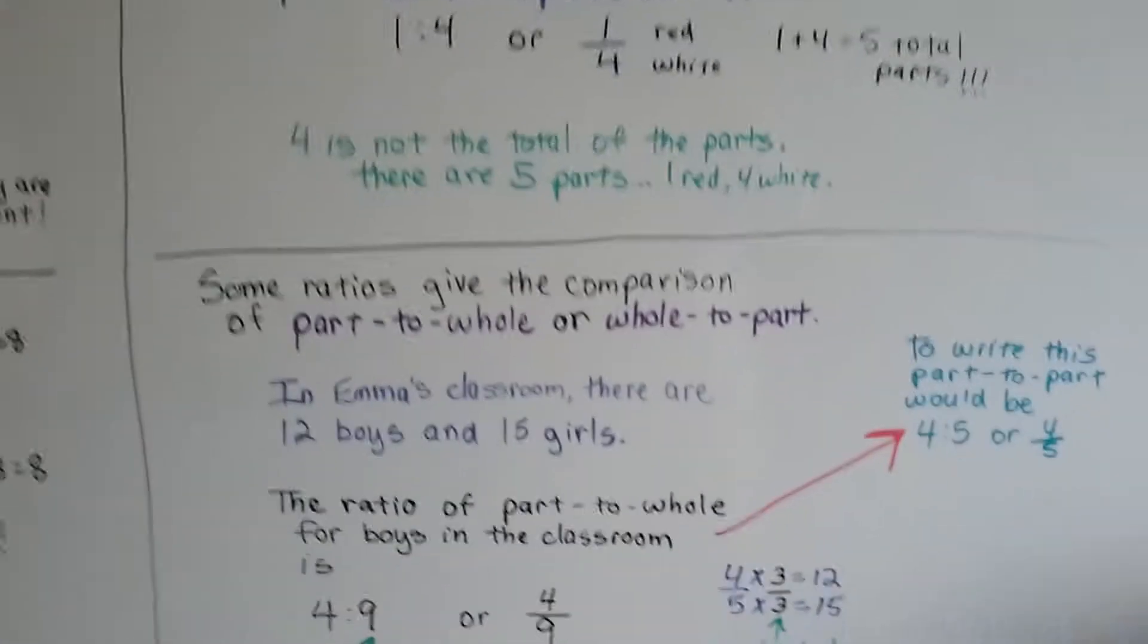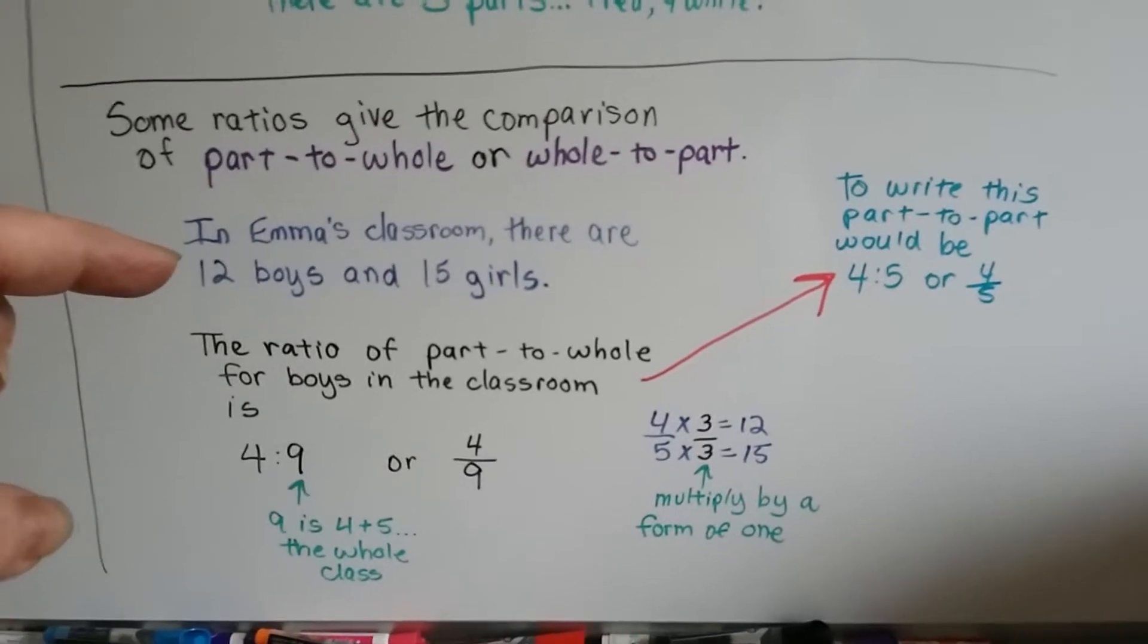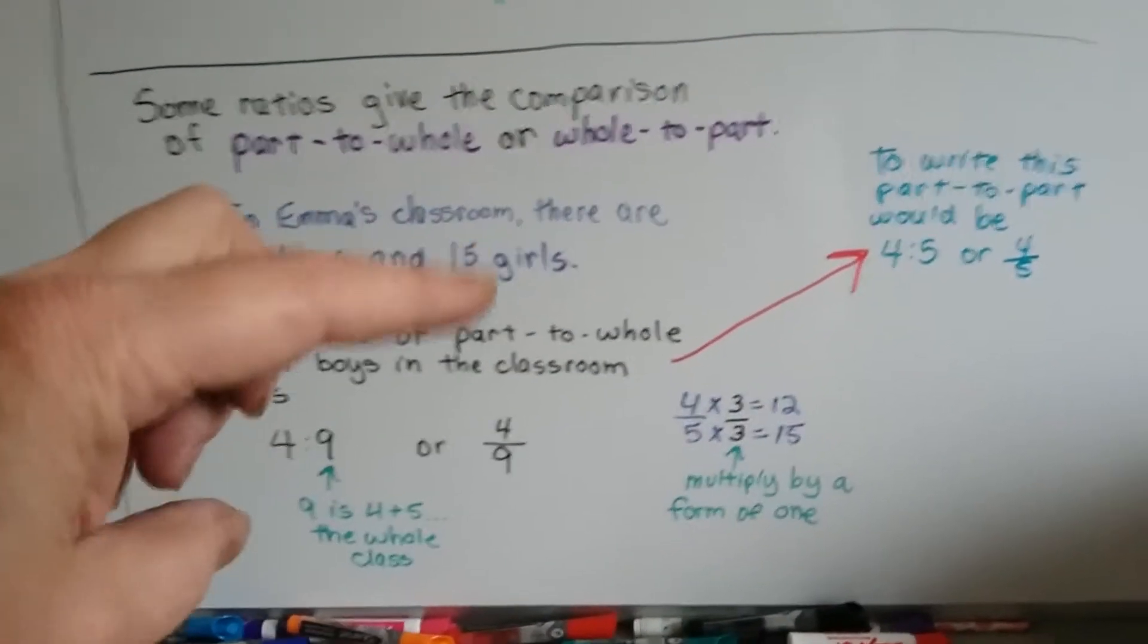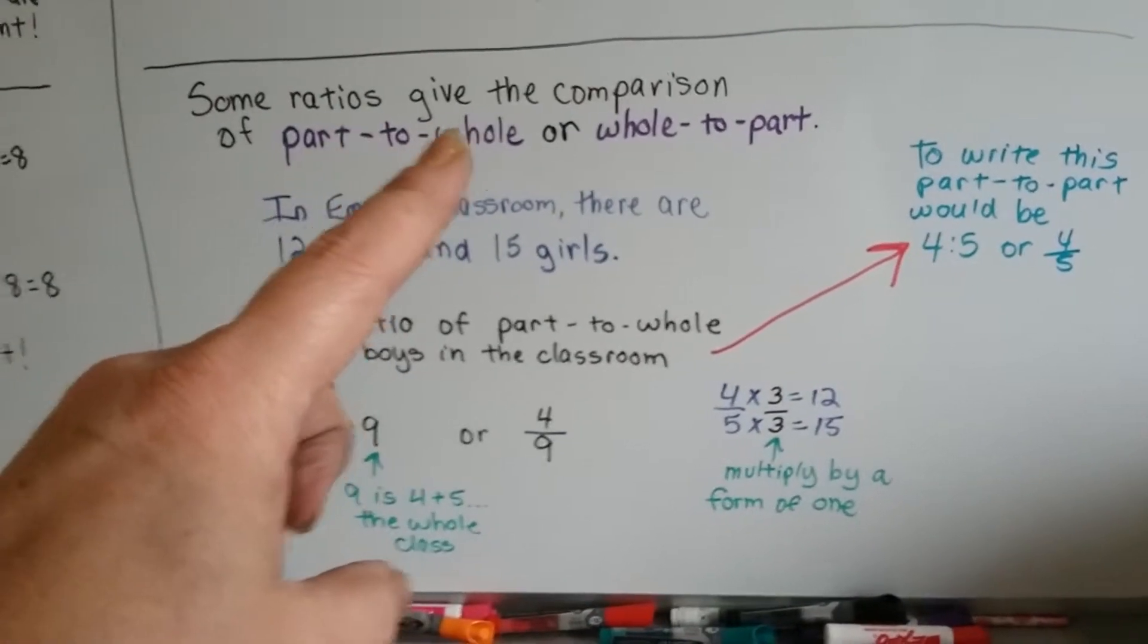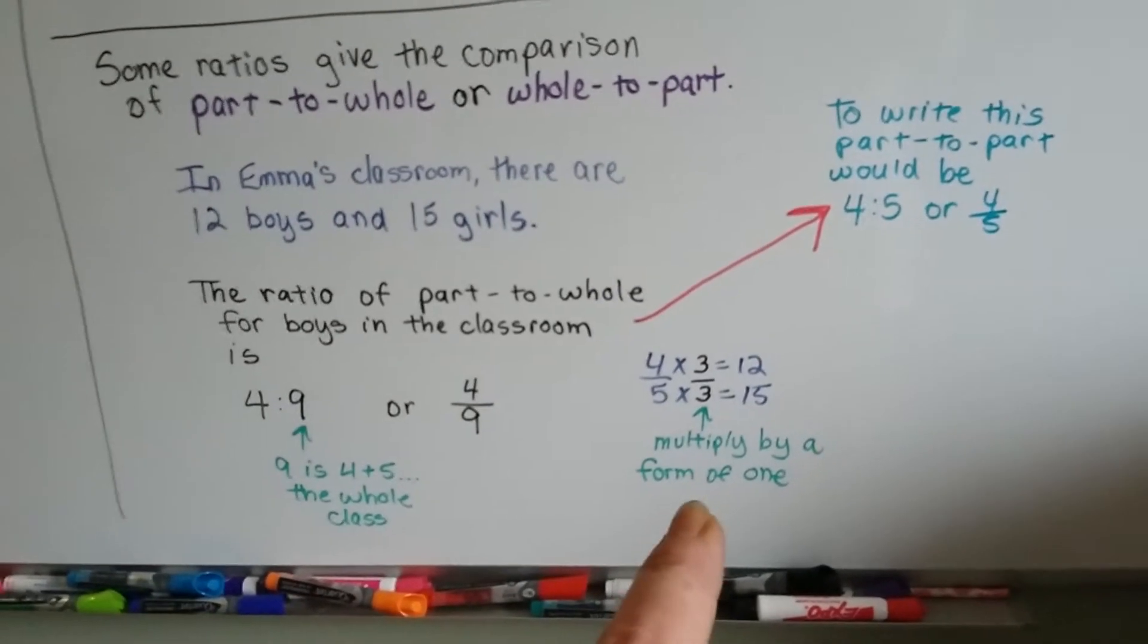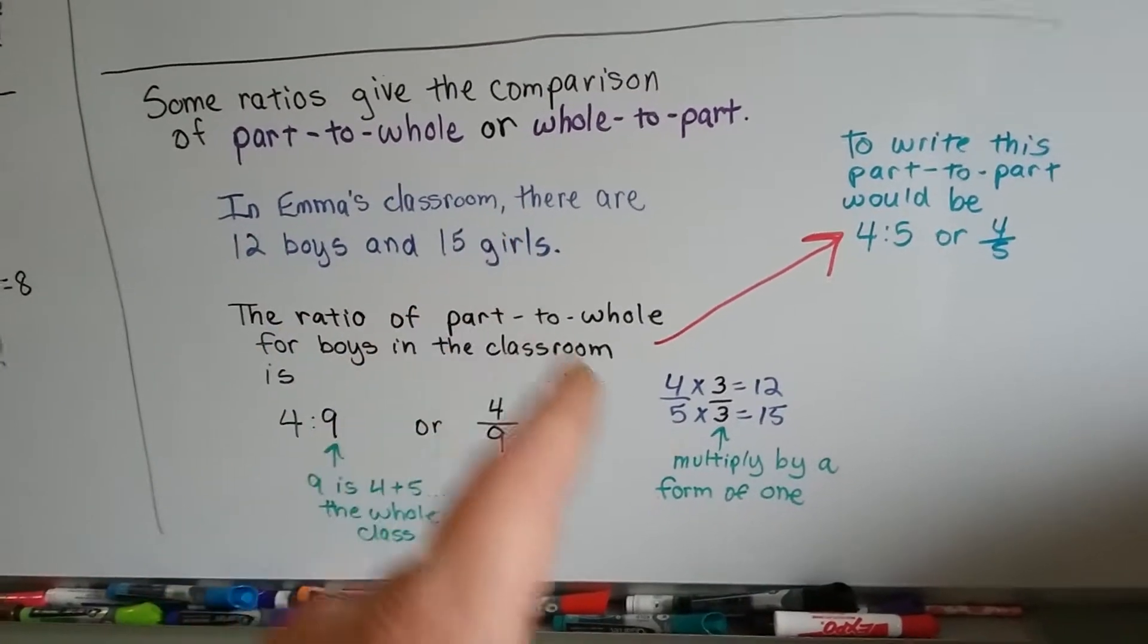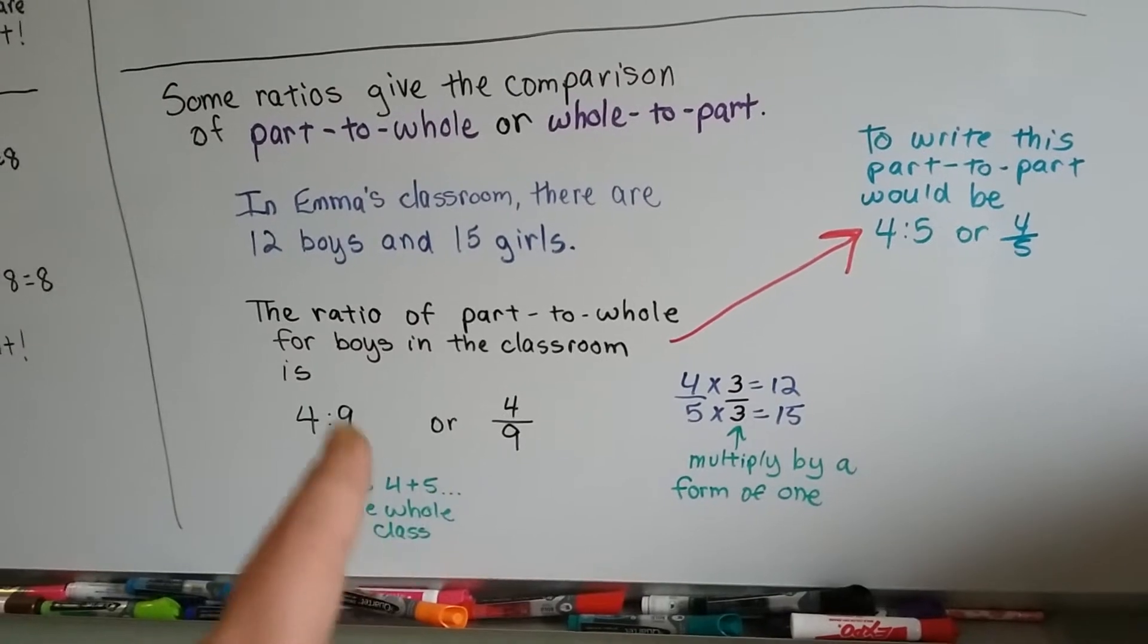It's different than fractions. Some ratios give the comparison of part-to-whole or whole-to-part. In Emma's classroom, there's 12 boys and 15 girls. We divide both of these by 3 and we get a ratio of 4 to 5. The total would be 9. 4 plus 5 is 9. So to give a part-to-whole ratio, we would say 4 of 9 are boys or 4 over 9. If we multiply by a form of 1, we can see that the 4 over 5 is the 12 and 15. We divided by a form of 1 to get the 4 and the 5 and we added those together to get the 9.